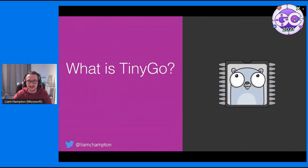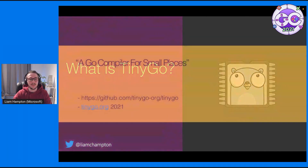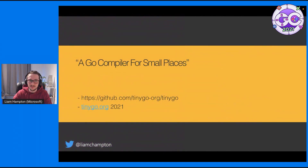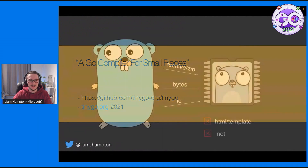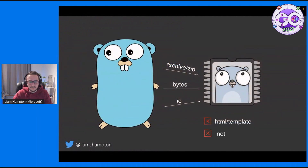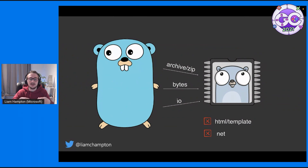So let's start with: what is TinyGo? It's a Go compiler for small places, as quite rightly stated on the readme on the GitHub and tinygo.org. It's a subset of libraries from the standard library in the core language package, and it's based on the LLVM compiler infrastructure, which is a collection of modular and reusable compiler and toolchain technologies.